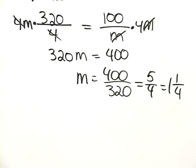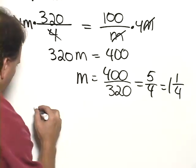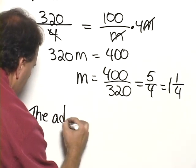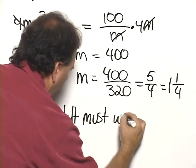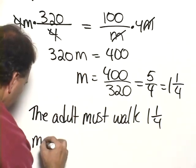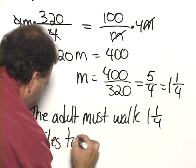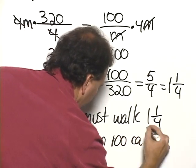which we can also write as 1 and 1 fourth, and remember this is miles. If you check that answer, you'll find it is correct, so the adult must walk 1 and 1 fourth miles to burn 100 calories.